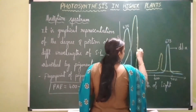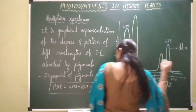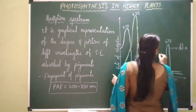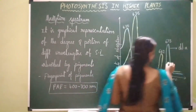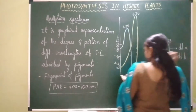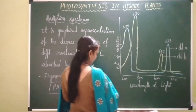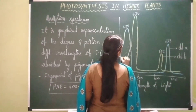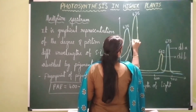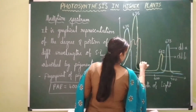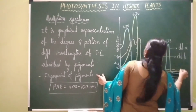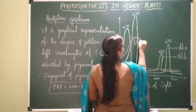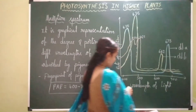Chlorophyll b is yellow-green in color. It also shows maximum absorption in blue and red regions. In the blue region it shows absorption maxima at 435 nanometers, whereas in the red region it shows absorption maxima at 642 nanometers. Next, carotenoids are orange to yellow colored pigments. They show absorption maxima at two peaks: 444 nanometers and 465 nanometers wavelength of sunlight.